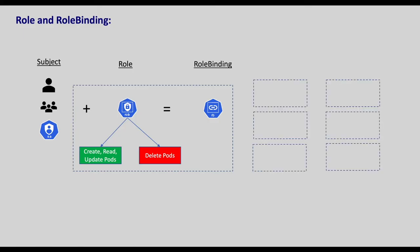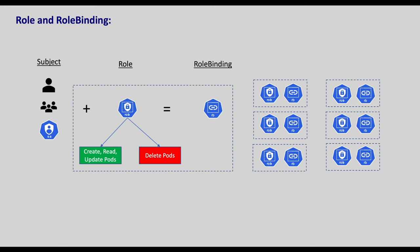This is because role and role binding are namespaced, meaning the user will have permissions only for the namespace where the role binding is defined. Previously we defined the role binding in the default namespace, but we are trying to access resources from the test namespace in which we didn't create the role binding. When we have multiple namespaces, defining role binding in every namespace is tedious, and some resources like persistent volumes are not even namespaced, so there must be a way to define roles at the cluster level.